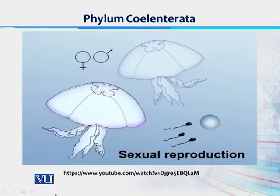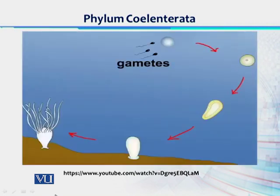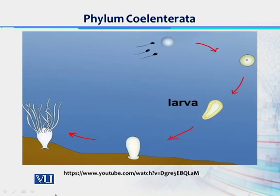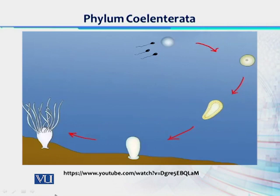There are male and female jellyfish that respectively produce sperm and eggs. The male releases sperm into the water, which reaches the female gonads, fertilizing the eggs. The fertilized egg releases a free-swimming larva called a planula. This kind of reproduction is defined as sexual. The larval stage swims and finds a good place to settle, then originates a new polyp.